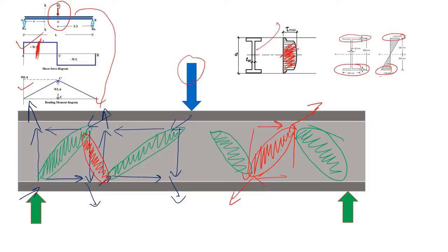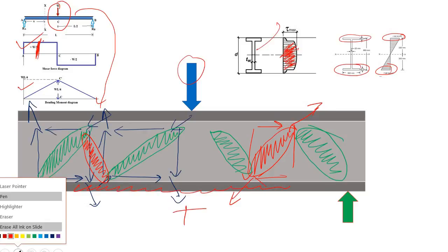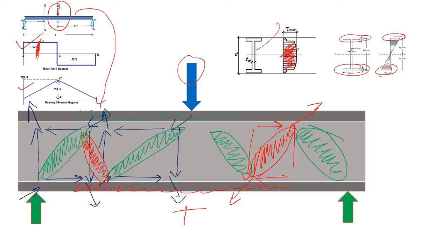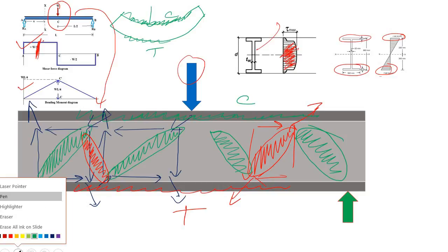Due to the external load you have a clear idea of how each part of the I-section is being stressed. First, due to the bending moment, the flanges are being stressed — the bottom flange is being tensioned and the top flange is being compressed. If you simply draw the deflected diagram of this beam under the external load, you can see all the top fibers are compressed and all the bottom fibers are tensed.